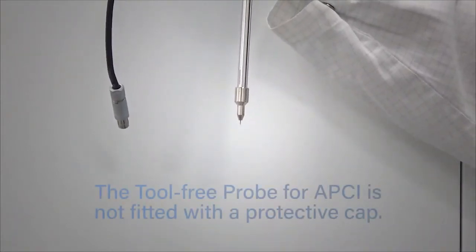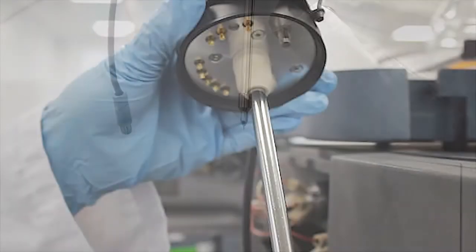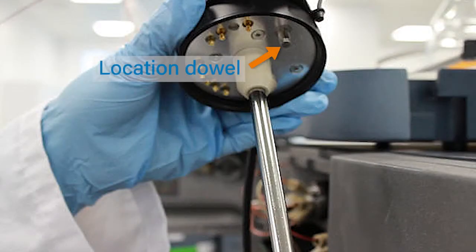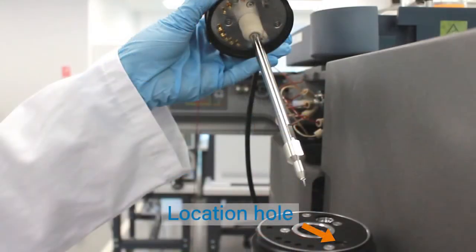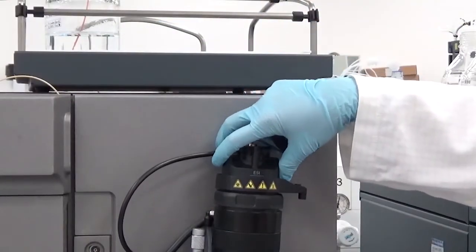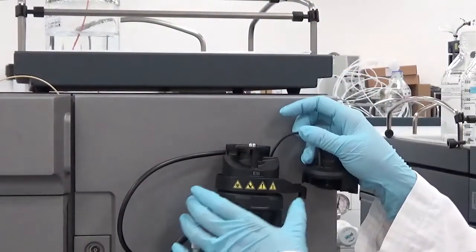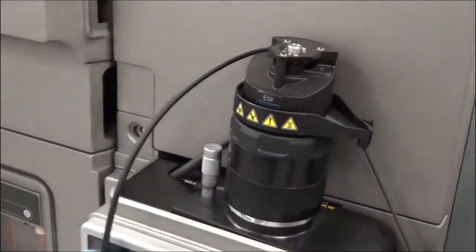Note that the tool-free APCI probe is not fitted with a protective cap. Align the probe location dowel on the probe adapter with the location hole in the probe adjuster. Slide the probe adapter into the probe adjuster. Turn the locking ring clockwise to tighten the probe adapter to the probe adjuster.